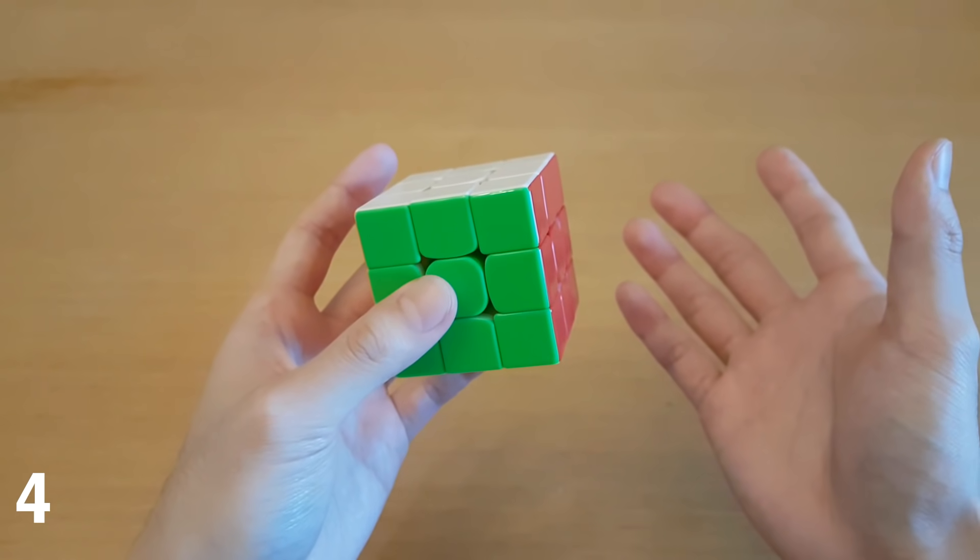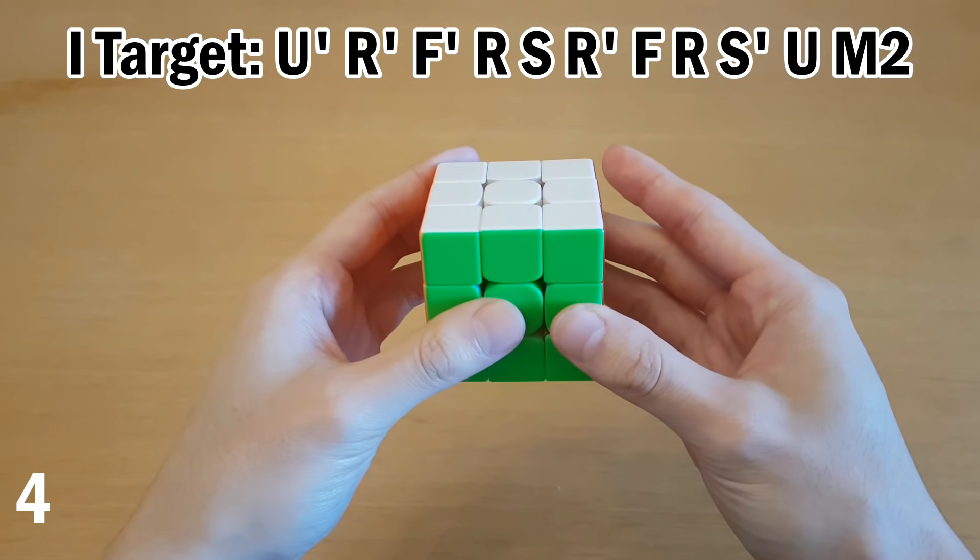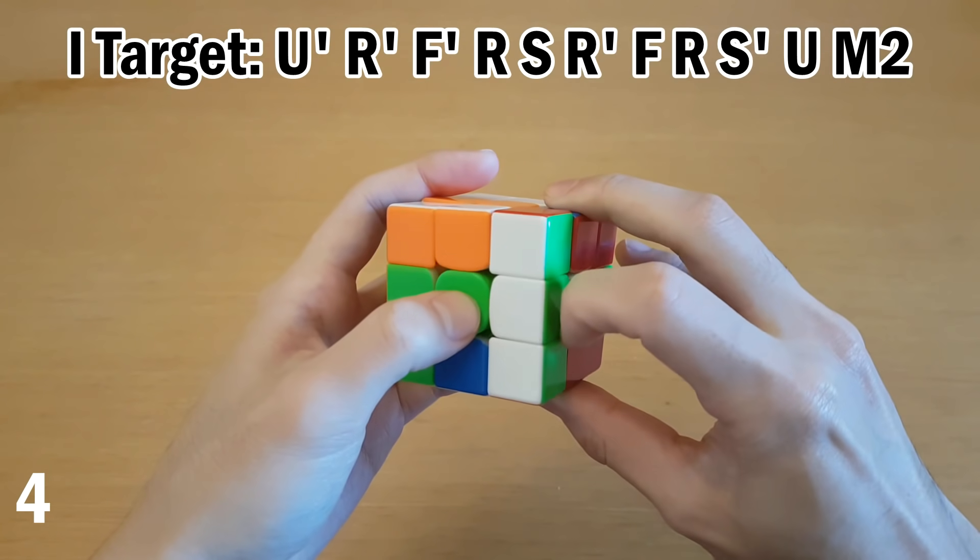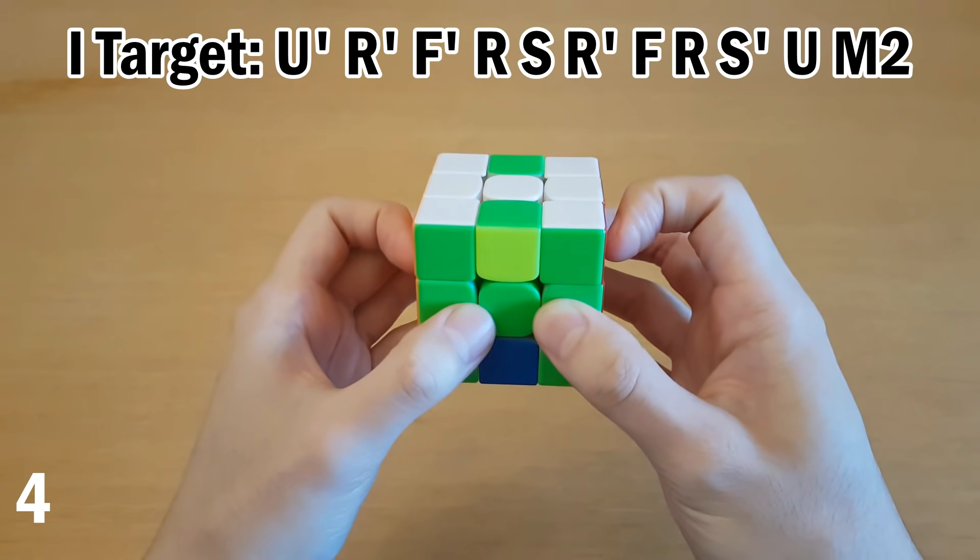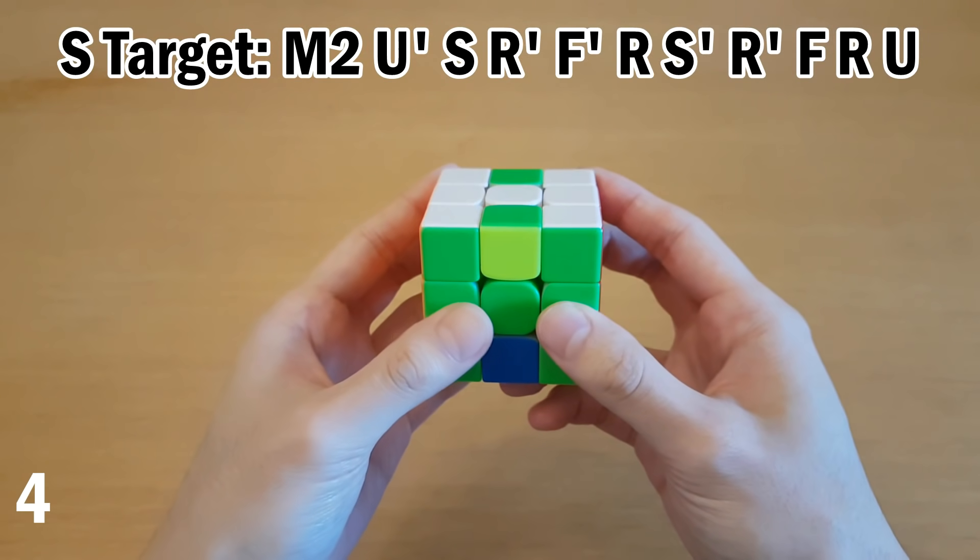First I'll just show better algorithms you could be doing instead. So, the algorithm for I should go like this. And the algorithm for S is just the reverse of that, so M2 first.